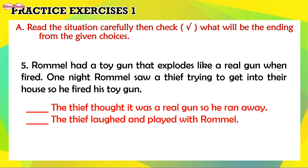5. Rommel had a toy gun that explodes like a real gun when fired. One night Rommel saw a thief trying to get into their house, so he fired his toy gun. The thief thought it was a real gun, so he ran away.